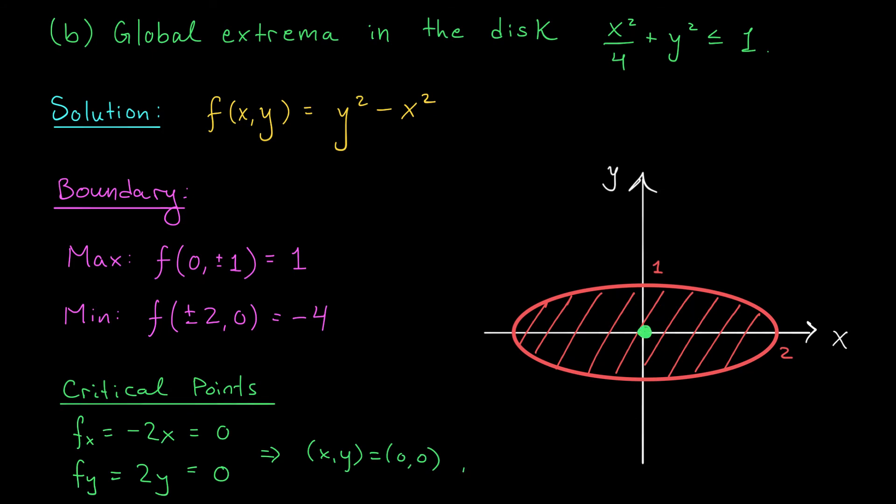So the only other possible location for a global max or min is right here. But it turns out this is not going to be the case. If you plug in 0, 0, you'll see that f has a value of 0 there. So it's not a minimum. It has a smaller value at plus or minus 2, 0, and it's not a maximum. It has a larger value at 0, plus or minus 1. So even though we've allowed ourselves to take points inside the disk, the maximum still occurs at 0, plus or minus 1, and the minimum still occurs at plus or minus 2, 0.